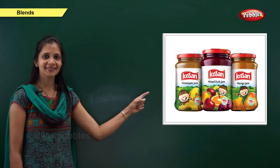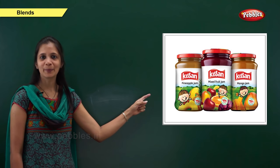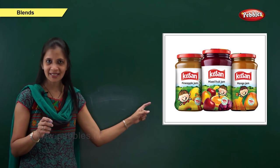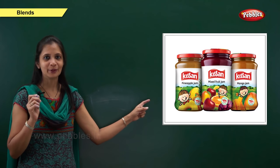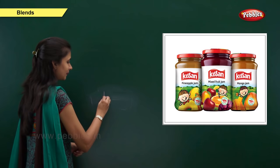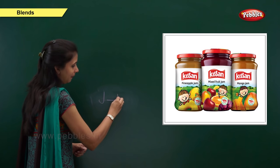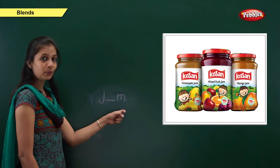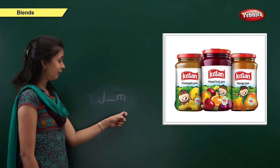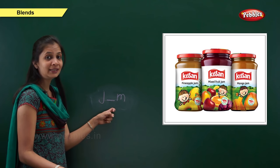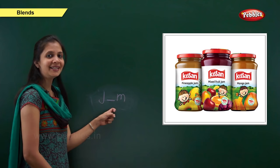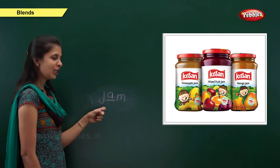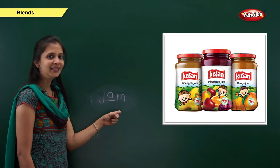Next one. Which picture? Yes, it is jam. What is the sound of this word? It is j, a, m — jam. When the sound is 'j', the letter is j. When the ending sound is 'm', the letter is m. When the middle sound is 'a', what is the letter? It is a. Very good. So: j, a, m — jam.